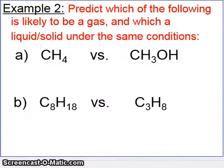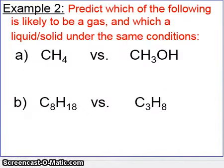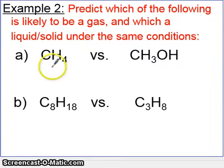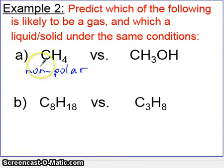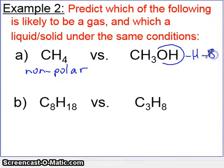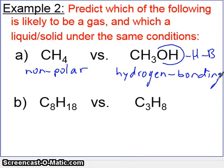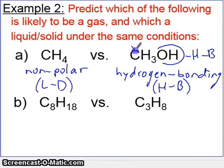Let's apply this concept. Predict which of the following is likely to be a gas and which a liquid or solid. For CH4 versus CH3OH: CH4 is nonpolar, with 4 hydrogens equally distributed around the carbon. CH3OH has an O-H portion, which means hydrogen bonding. Since hydrogen bonding is the strongest force, CH3OH has the higher boiling point. In fact, CH3OH (methanol) is a liquid at room temperature, while CH4 is a gas at room temperature.